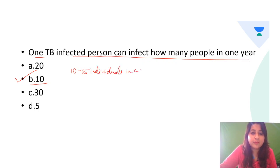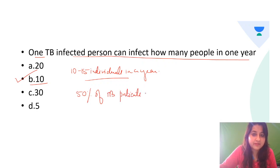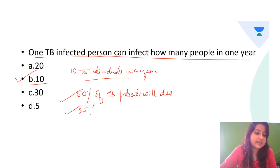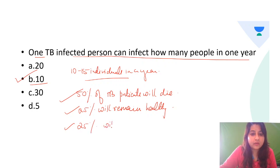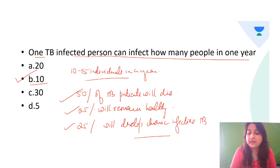This is very important. If those TB patients are left untreated, without treatment 50% of TB patients will go on to die. 25% will remain healthy, and another 25% will go on to develop chronic infectious TB. So this is very important. One TB infected person can infect 10 to 15 individuals in a year.